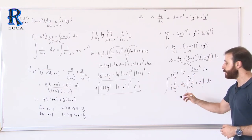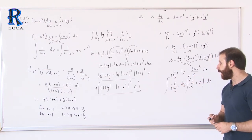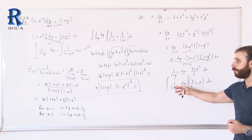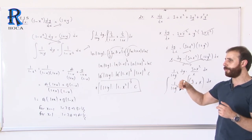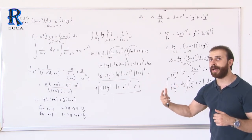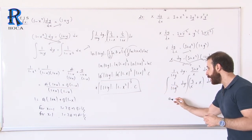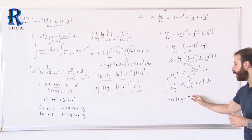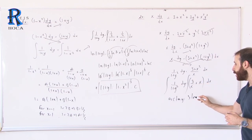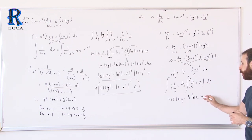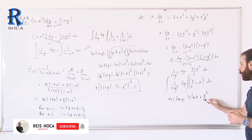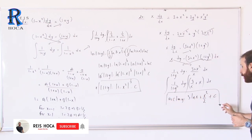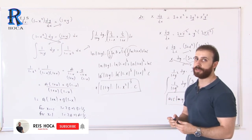Now take the integrals. This equation is separable. The integral of 1 over (1 plus y squared) is arctan y, just as the integral of 1 over (1 plus x squared) is arctan x. On the right: the integral of 3 over x is 3 ln|x|, and the integral of x is x squared over 2. Don't forget to add the constant plus c. This is our solution.